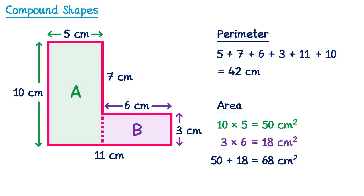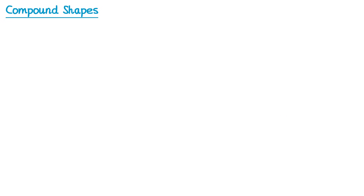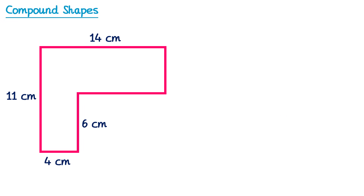Unfortunately, exam questions on compound shapes are rarely this straightforward. Let's have a look at another one. If we take this compound shape and try to find its perimeter, the first thing to notice is that we actually have two sides missing — we don't know the length of this side or this side. So to find the perimeter we're going to need to work those out first.